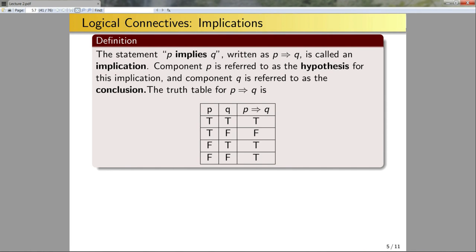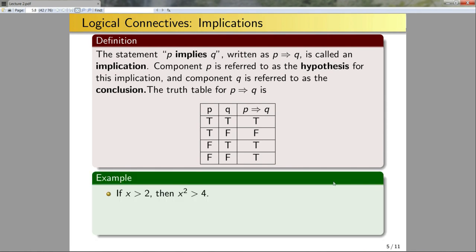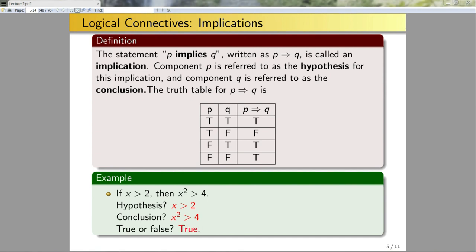Let's look at an example: 'If X is greater than 2, then X squared is greater than 4.' The hypothesis is that X is greater than 2, and the conclusion is that X² is greater than 4. If X is greater than 2, when I square it, I'll get something bigger than 2² = 4. So this is a true implication — specifically true in the non-vacuous sense, sitting at the true-true-true case.